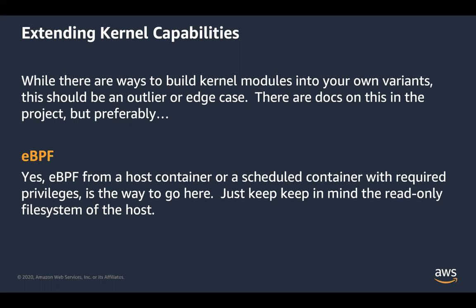When running BottleRocket OS on EC2 to start the admin container for troubleshooting, we typically connect via SSM. Is there a way to start the admin container when running BottleRocket outside AWS without SSM? Yes — you can activate it two ways. You can activate it via the control container using the API itself, or you can use user data. When the host is spun up, the user data can specify whether the admin container should be activated. So you can activate it as part of the provisioning scripts and user data for the host itself.